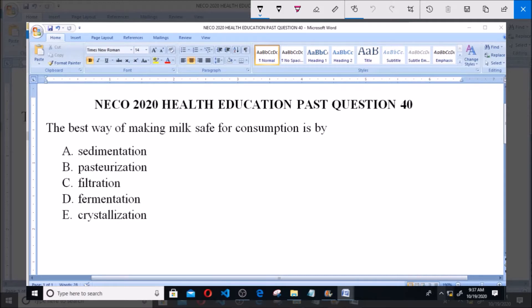The best way of making milk safe for consumption is by A. Sedimentation, B. Pasteurization, C. Filtration, D. Fermentation, and E. Crystallization.